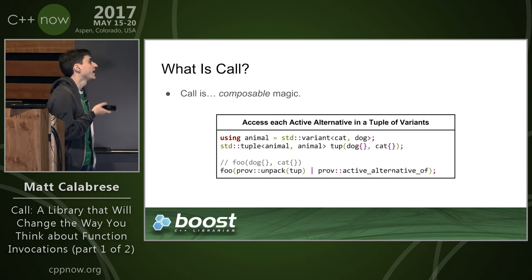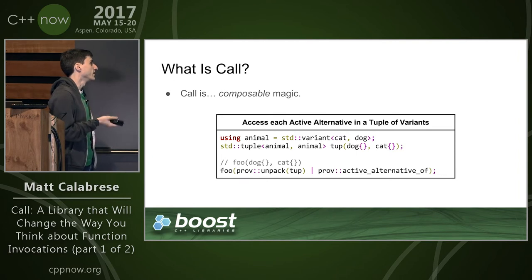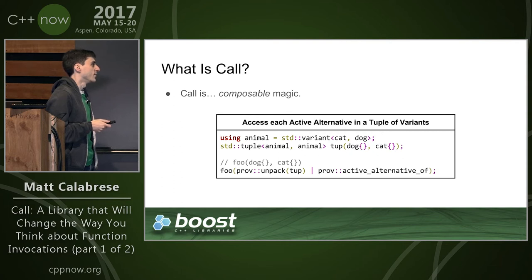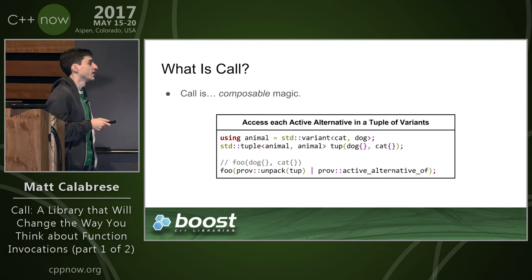Call is also composable. Let's say you have a tuple of variants and you want to expand every single active element. There's a simple syntax: you write 'unpack(the_tuple)' with a bar notation, which states that for each element unpacked, pass it along to the active_alternative_of function. So ultimately foo gets, in this case, 'dog' and 'cat' because that's what the two variants were initialized with.